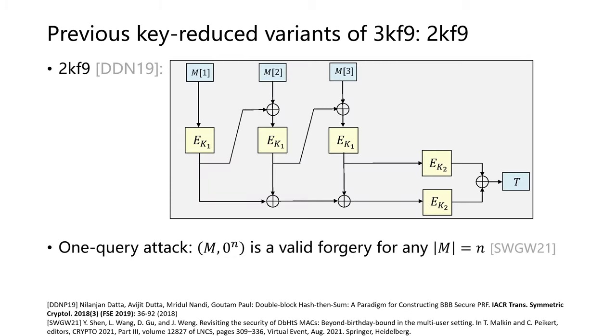For 2kf9, subsequently, Shen et al. also proposed forgery attacks and a similar attack when the fixed function is added. Thus, these attacks invalidated the earlier security proofs.